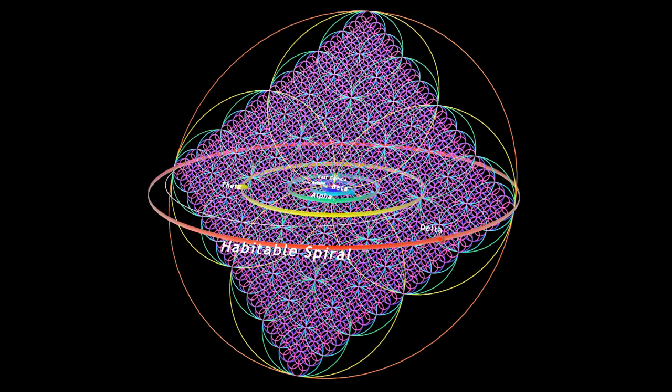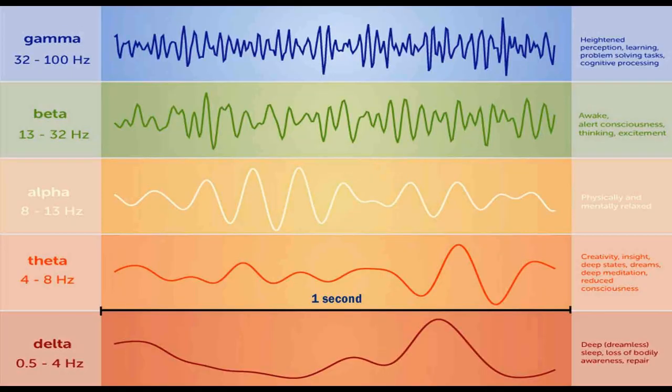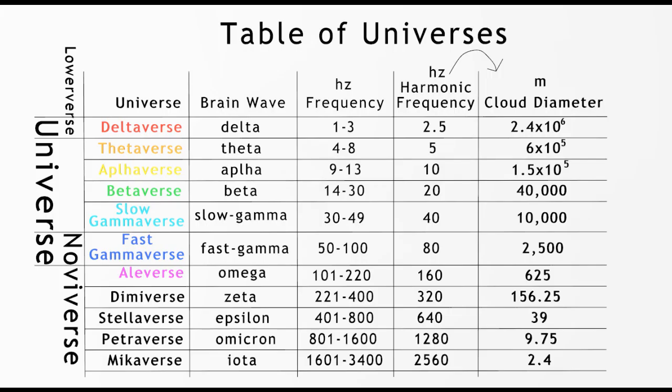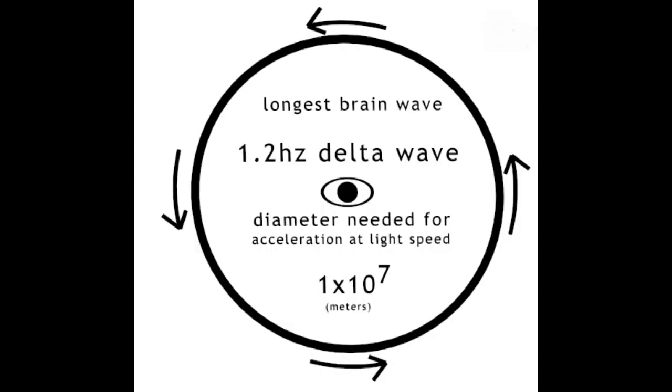For example, at 1.2 Hz, the delta wave may be considered the longest wave in our experience. When you consider orbital motion of the fifth dimension consisting of light speed acceleration towards center, you see that each harmonic manifests or interacts rather with a specific field of energy. This is what gives us the table of universe and implies that our next conscious harmonic will be related to a frequency of 100 to 220 Hz centered around 160 Hz and 320 Hz to follow.